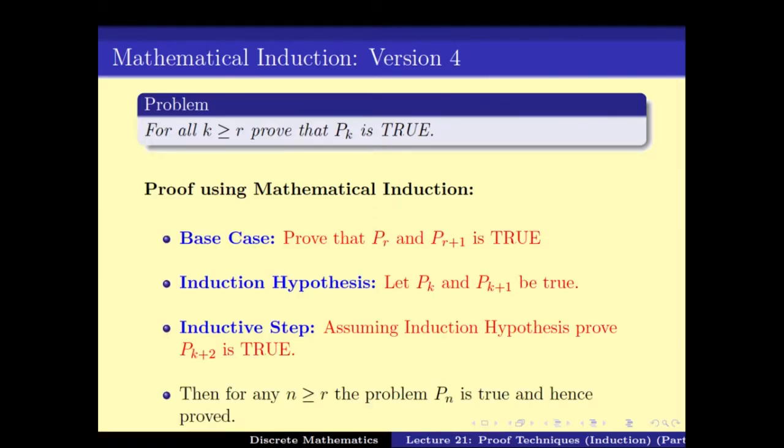We also have another version which says that if you cannot prove that Pk implies Pk+2, but maybe you can prove that if Pk and Pk+1 are both true then Pk+2 is true — then we also get the same result. These are defined versions and depending on the problem, or depending on what you can prove using the inductive step, we have to choose the appropriate version.